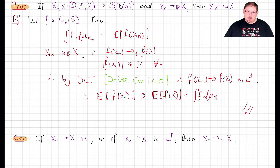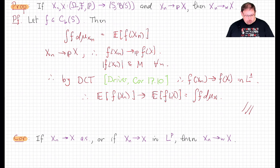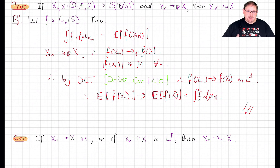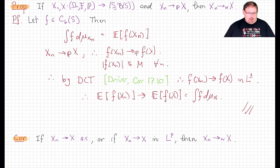Since both almost sure convergence and L^p convergence imply convergence in probability, we also see that almost sure or L^p convergence imply weak convergence. So this new notion of convergence fits into the hierarchy of convergence notions, and it allows for convergence in many cases where the other ones do not.